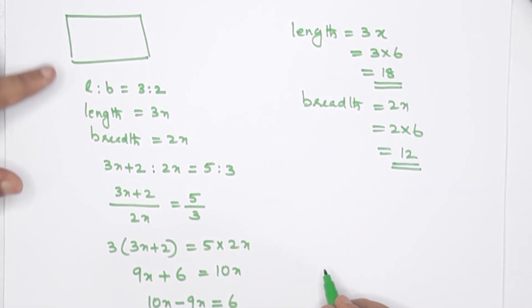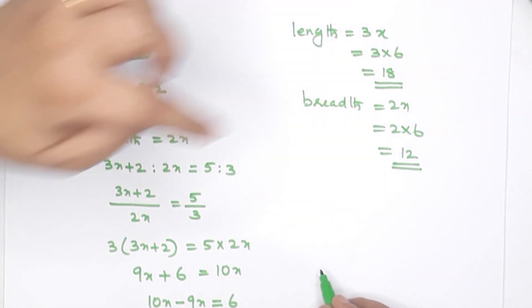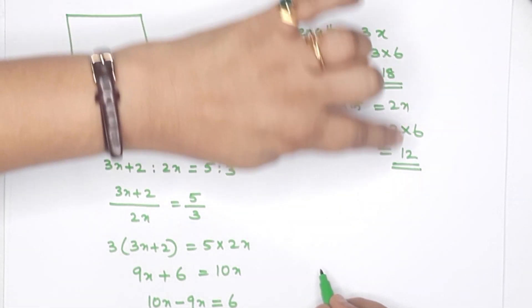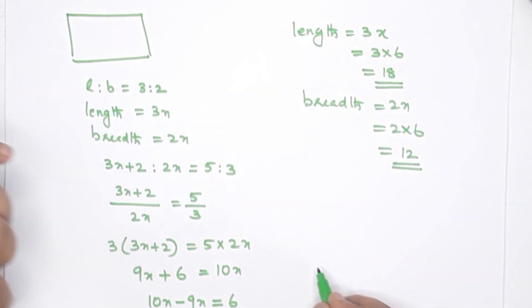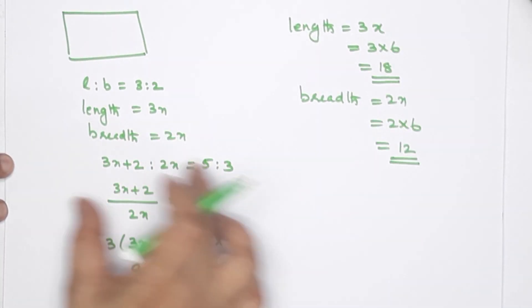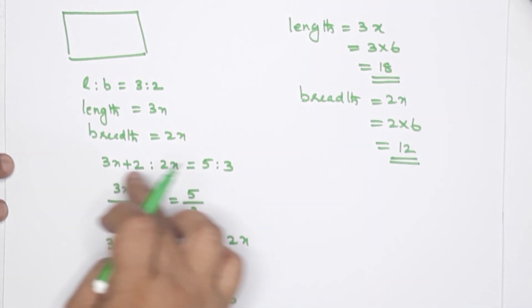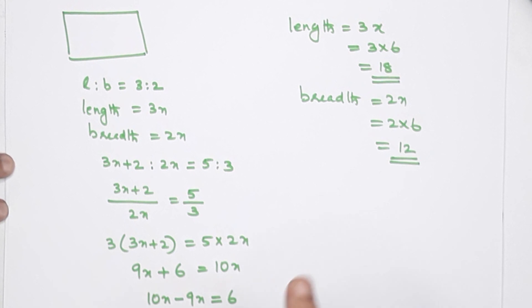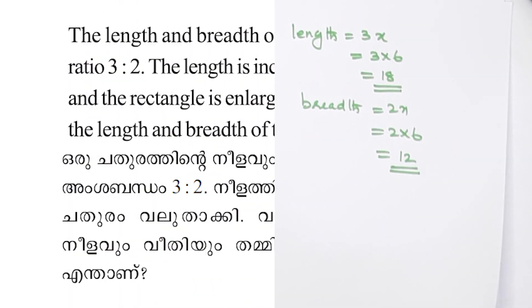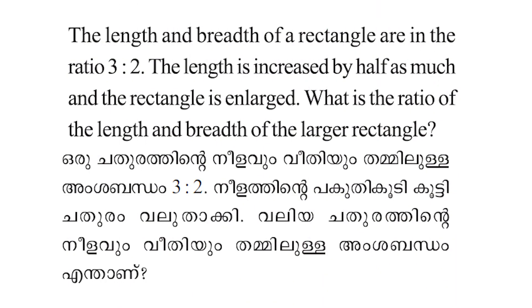The original rectangle has length 18 and breadth 12. The ratio will change because we cross-multiply. This is page number 136.